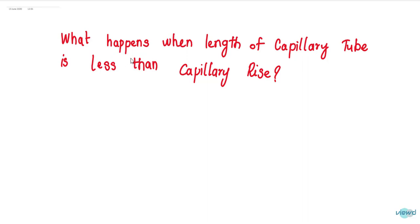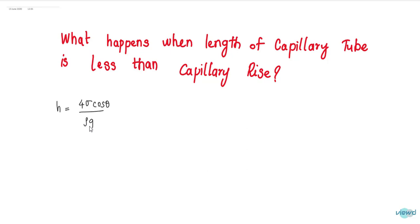This question is asked in most of the interviews. I will answer this question in this video. What happens when the length of the capillary tube is less than the capillary rise? You can find the capillary rise from this formula: H is equal to 4 sigma cos theta divided by rho g d. This is the formula for capillary rise.